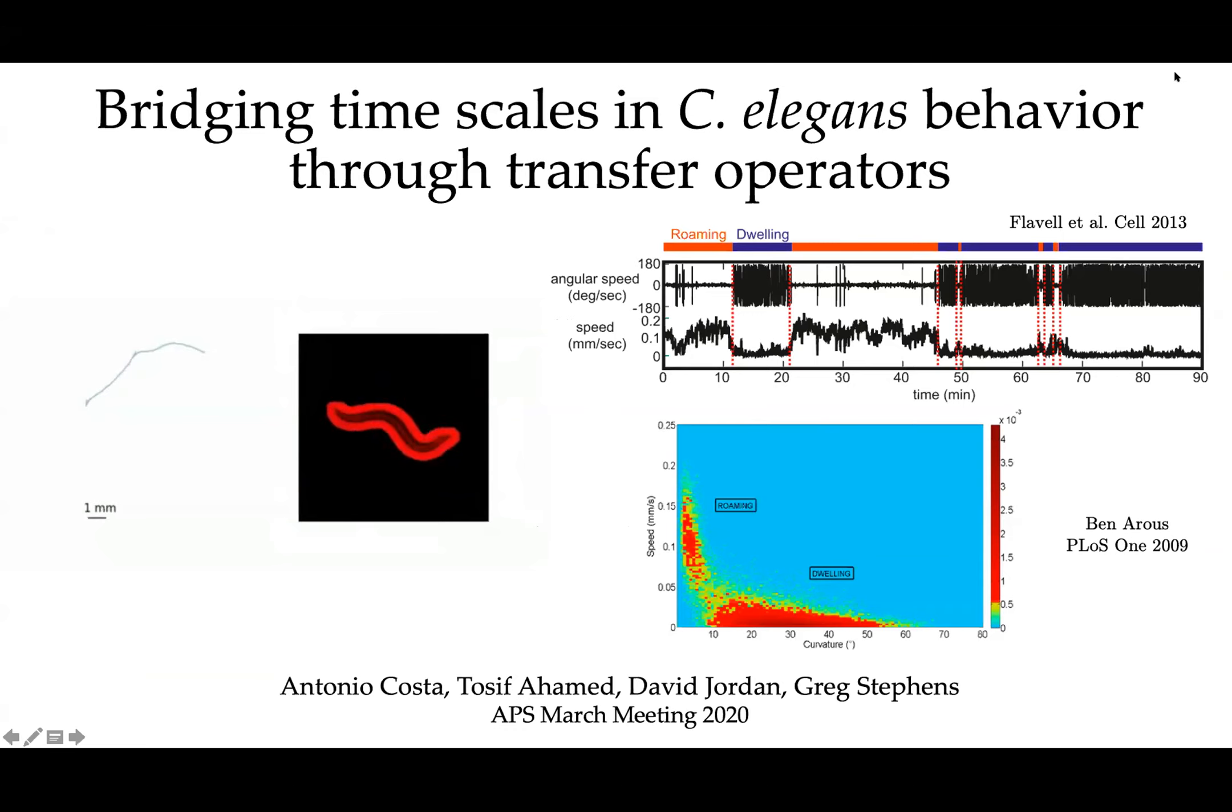Animal behavior exhibits multiple timescales. There's fine-scale posture movements, like you can see here in this video, that are controlled by motor neurons. There's also longer timescale sequences of behavior that are controlled by higher-order structures in the nervous system.